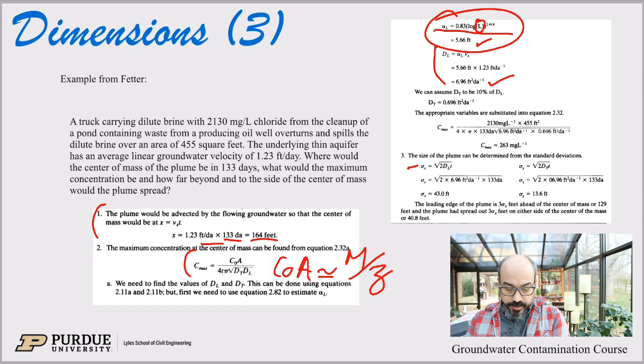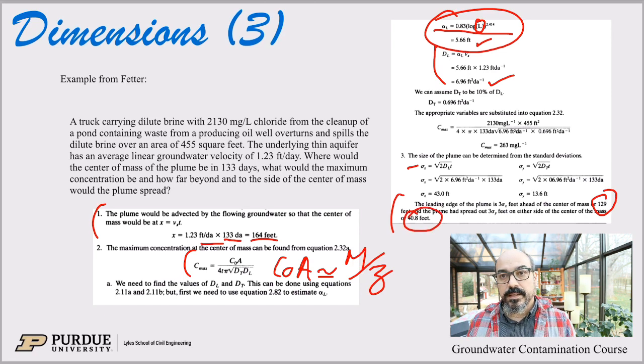And you can calculate either three or two standard deviations away, depending on what criteria you use. Let's follow Federer and just use three standard deviations away from the max to see that we are at 129 feet spread 40 feet sideways.